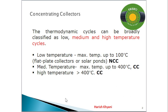Today we are going to discuss concentrating collectors. In the last class we discussed two types of solar collectors: non-concentrating, where there is no concentration, and concentrating. In the non-concentrating case, these are used for low temperature applications, and concentrating collectors are used for high and medium temperature applications. If we classify thermodynamic cycles from a mechanical aspect, they can be classified as low, medium, and high temperature cycles. Low temperature range is up to 100 degree centigrade.